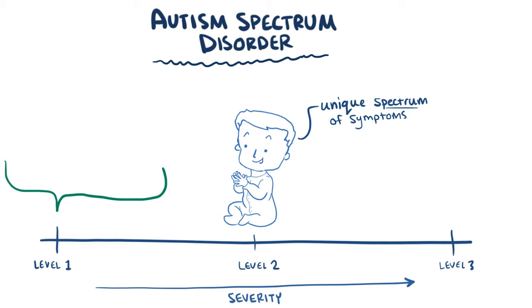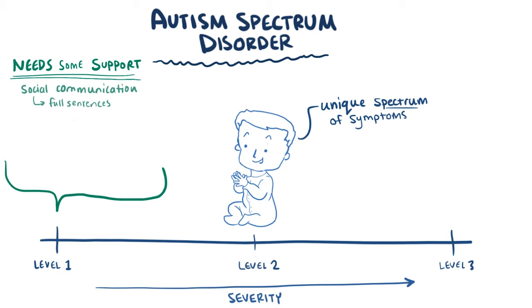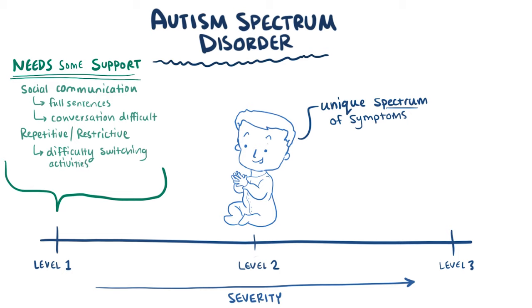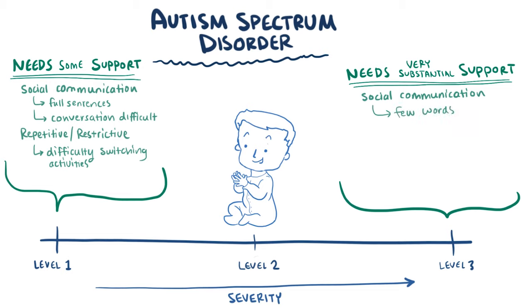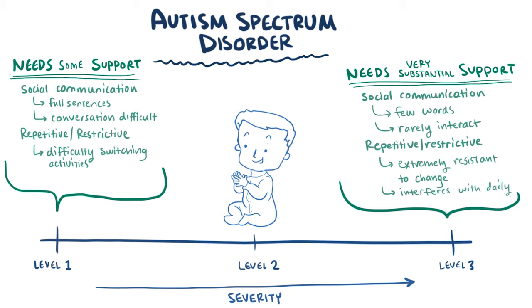For example, a severity level 1 would indicate the child needs some support. For social communication, they might speak in full sentences and engage in communication, but normal back-and-forth conversation with others just doesn't seem to work. For repetitive and restrictive behaviors, they might have difficulty switching between activities. On the other side of the spectrum, a level 3 severity means the child needs very substantial support. On the social communication side, they might display very few words of intelligible speech and rarely initiate an interaction with others. For repetitive behaviors, they might be extremely resistant to change, and their behaviors seriously interfere with their daily life.